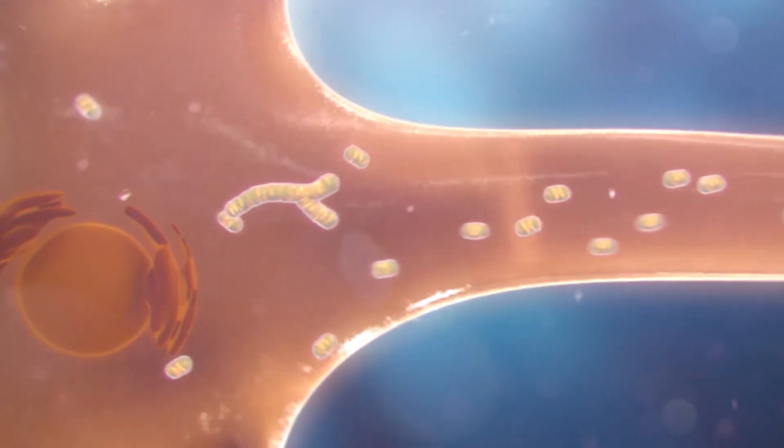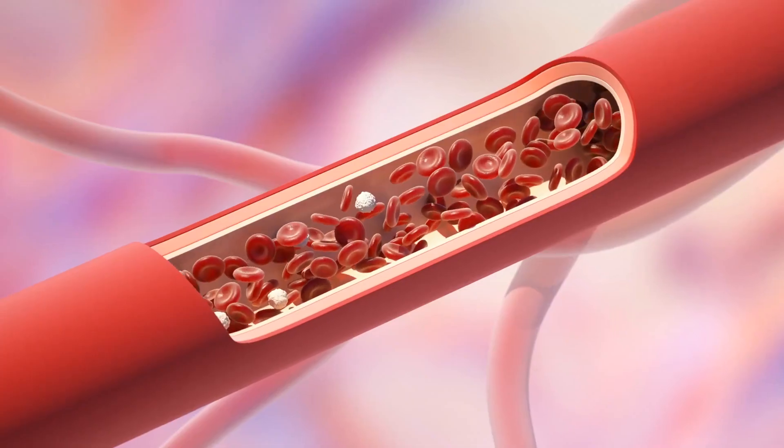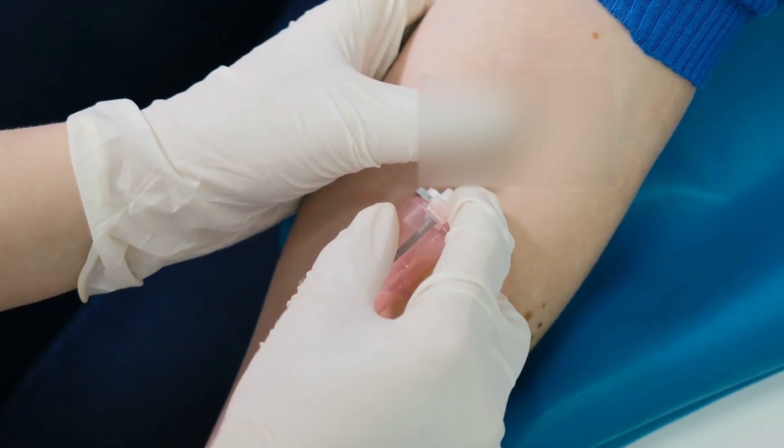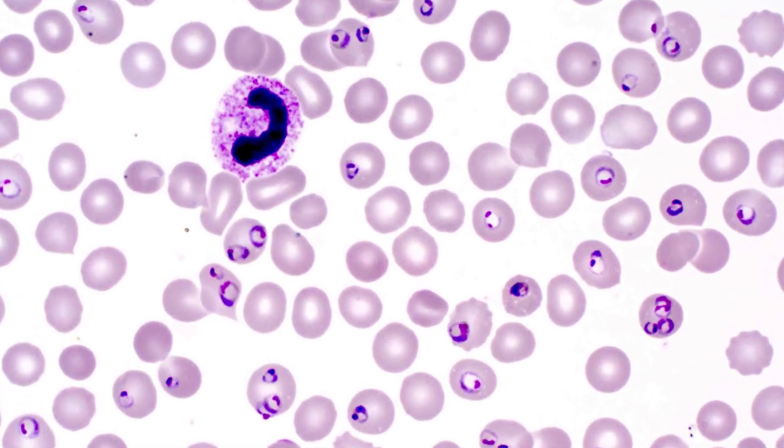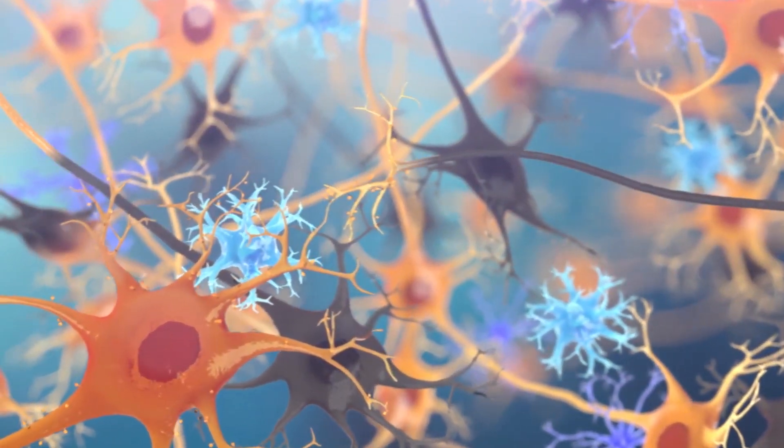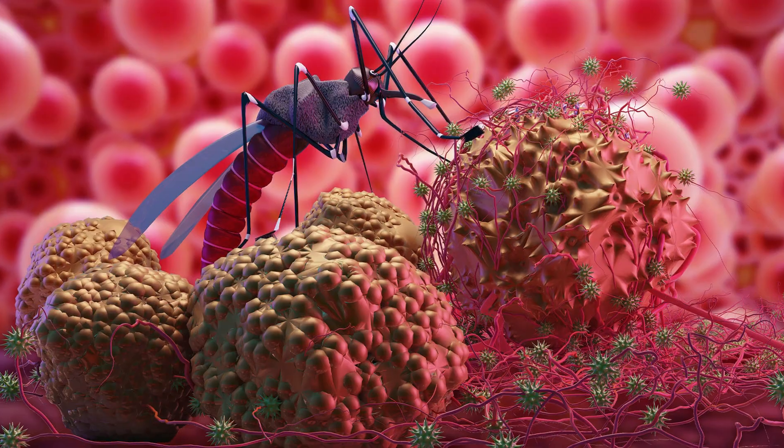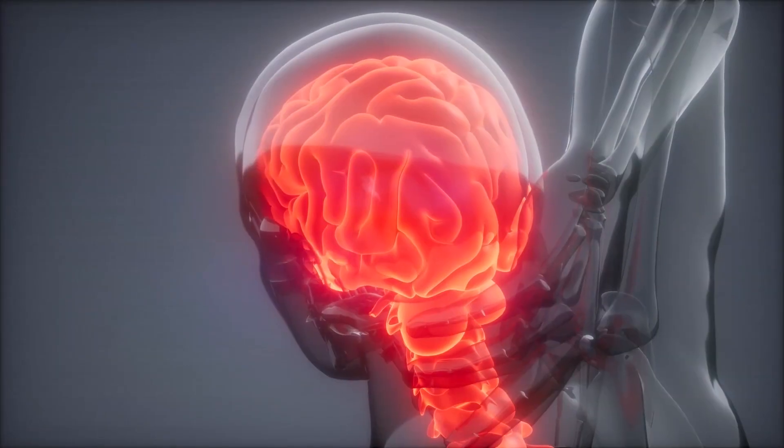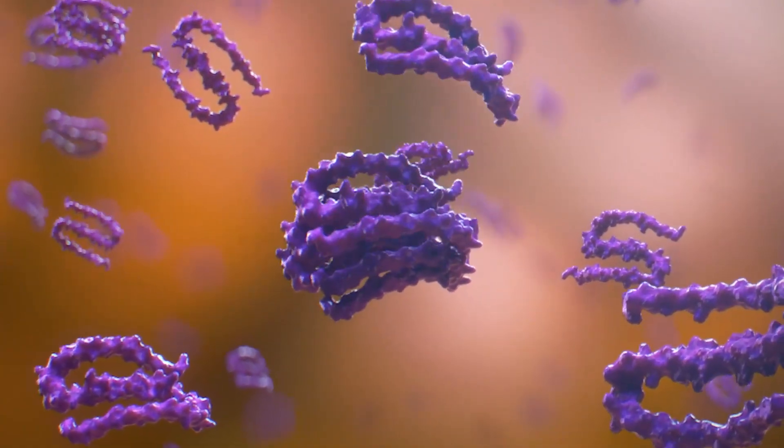Malaria can also be spread through organ transplants, blood transfusions, and the sharing of contaminated needles. The parasite has a lengthy incubation period, taking anywhere from 7 to 30 days before the initial symptoms begin to show. Those infected by malaria may go through fever, chills, headache, nausea, vomiting, and severe sweating, which go down after 6 to 10 hours.